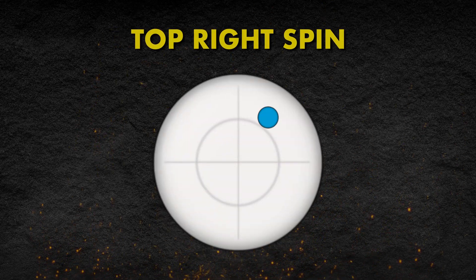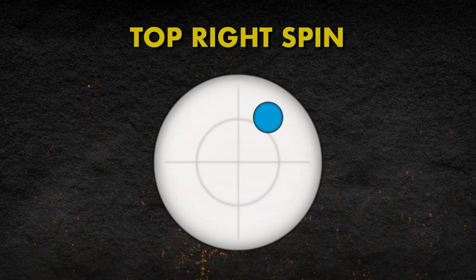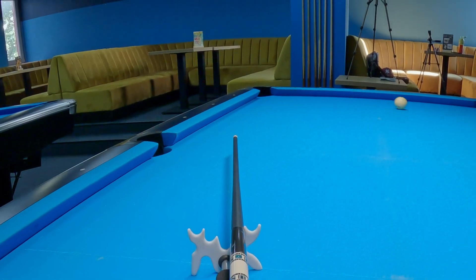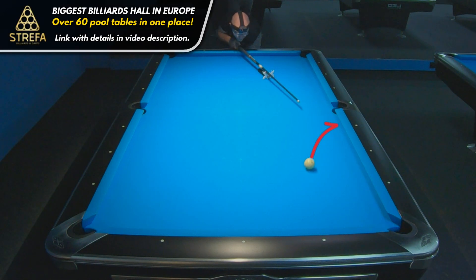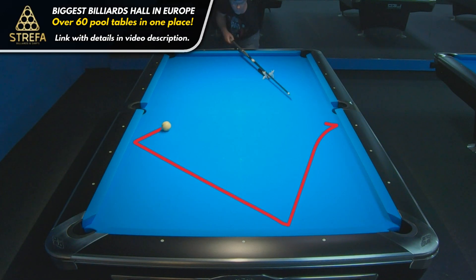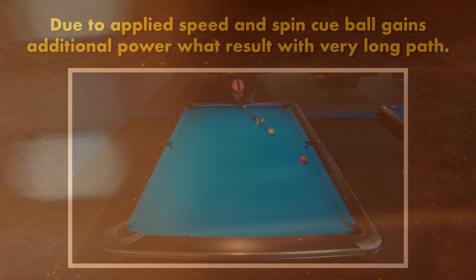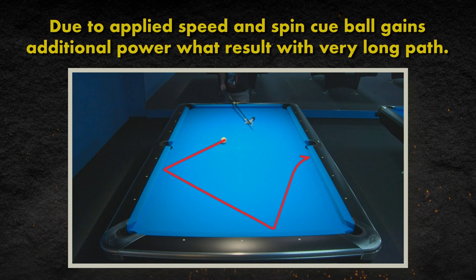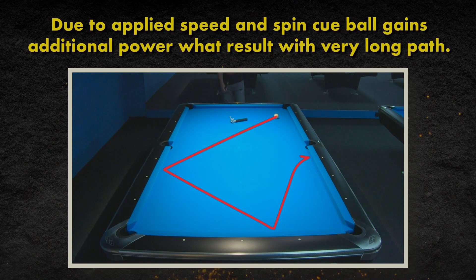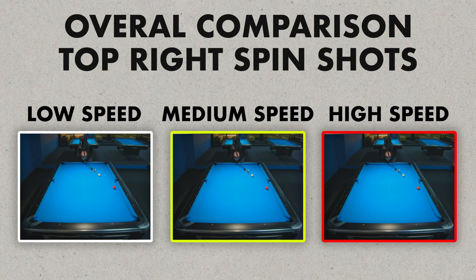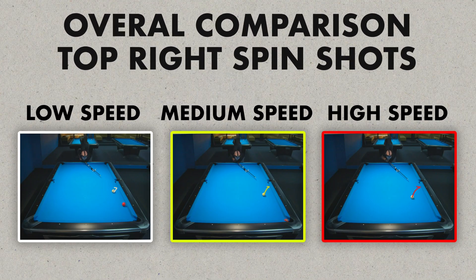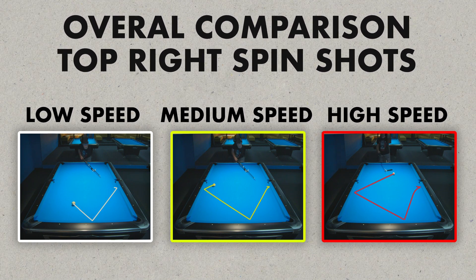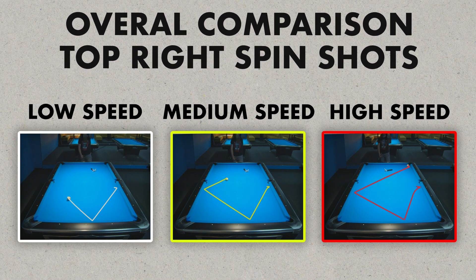Next we see what happens with top right spin at high speed. Due to the high amount of top spin and speed, the cue ball initially curves, and right spin is visible during contact with the short rail — the cue ball gains additional speed, resulting in a very long path landing close to the top right corner. This behavior is actually very similar to the remaining two shots with the same spin, but we can clearly see the difference between paths after contact with the bottom short rail.